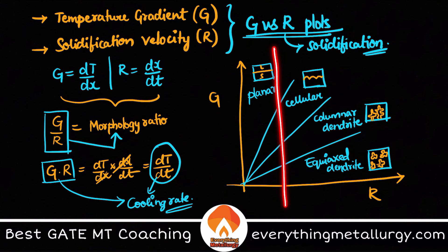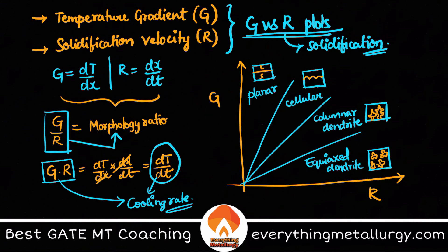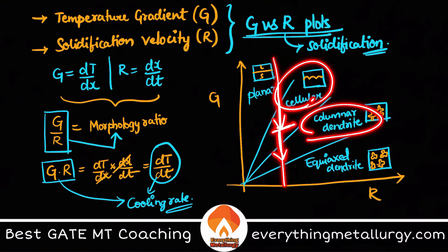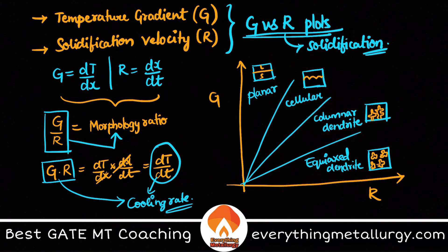Keeping R constant helps understand the concept more easily. At high G — the high-slope region — we find the planar solidification front. As we come down in G, cellular structures form due to constitutional supercooling, then columnar dendrites, and finally equiaxed dendrites.